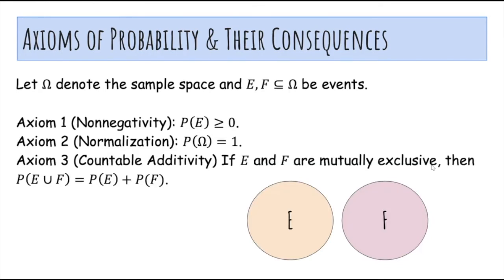The third axiom is countable additivity. So that means if E and F are mutually exclusive, so there's no overlap, then the probability of E union F is probability of E plus probability of F, which makes sense because they do not overlap at all.